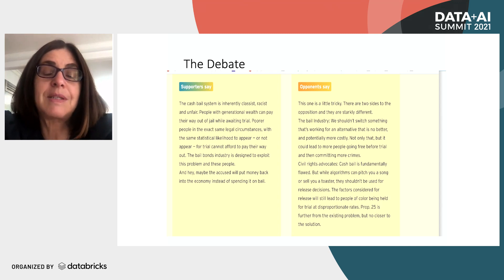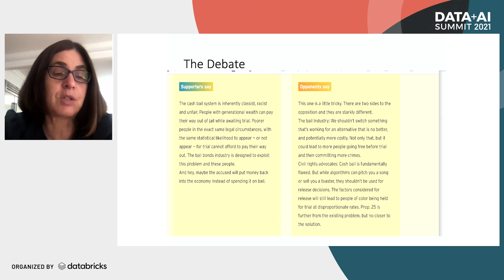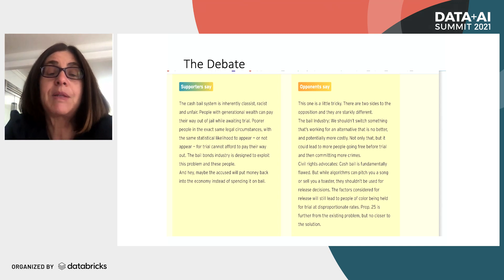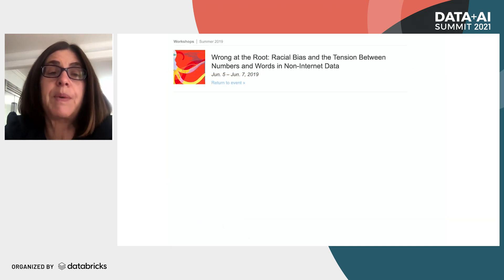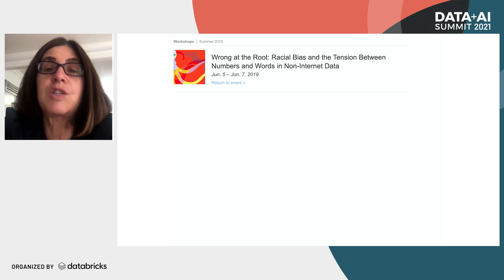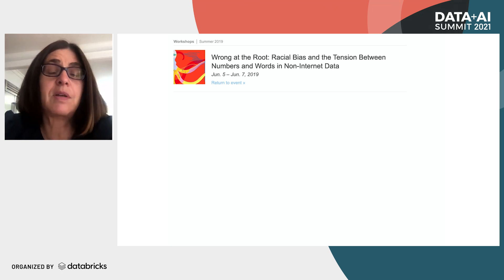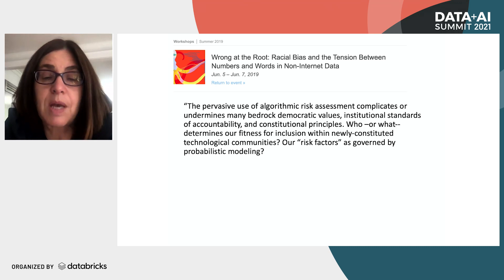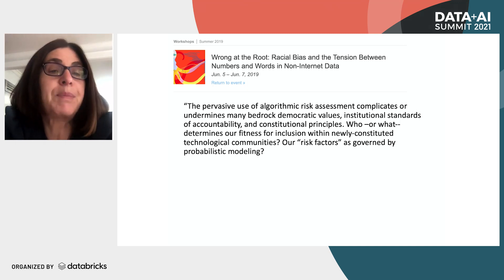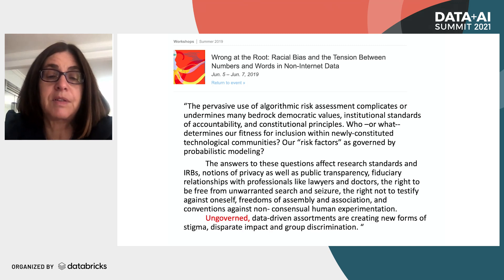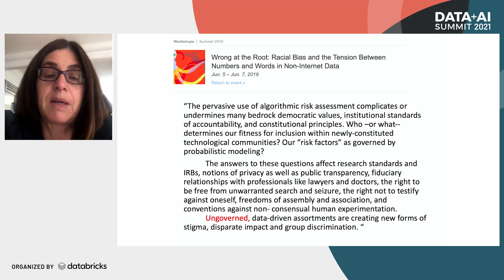This really is representative of the basic distrust in algorithms that is pervasive. I wasn't that surprised the bill didn't pass, because the consequence is that cash bail is still in place. A few years earlier, we ran a workshop at the Simons Institute on racial bias, and the pervasive sentiment among social scientists and lawyers was that risk assessment complicates many bedrock democratic values, standards of accountability, and that ungoverned data-driven systems create new forms of stigma, disparate impact, and group discrimination.